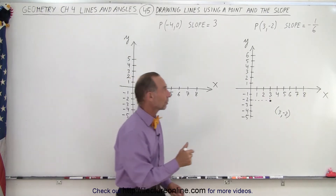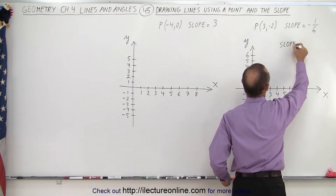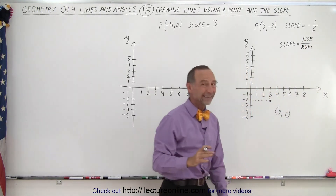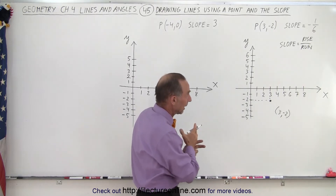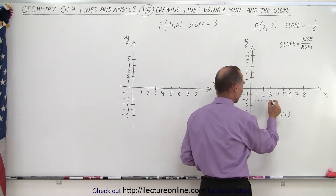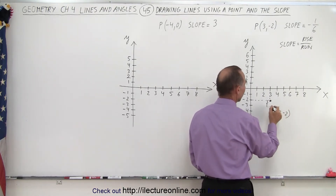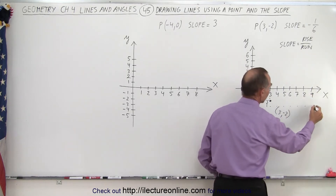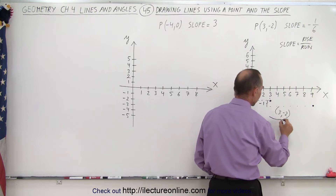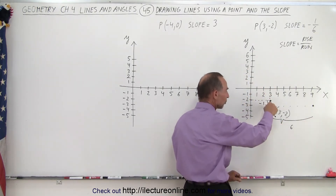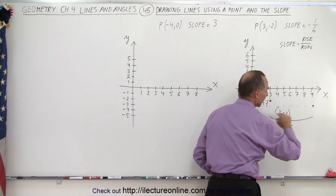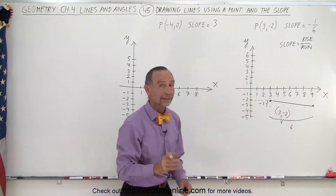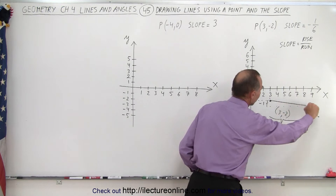Now we're given that the slope is negative 1 over 6. Remember that the slope is the change in the y value over the x value — it is equal to the rise over the run. Here the rise is negative 1; in other words, it's actually a drop of negative 1, and the run is 6. Starting from our point, we drop 1 — that's the negative rise of negative 1 — and then we have a run of 6, giving us one more point at x equals 9. So we dropped 1 and ran 6 in the positive x direction, and then we draw a new point right there. When we connect those two points, there's the line represented by that point (3, negative 2) and the slope negative 1 over 6.